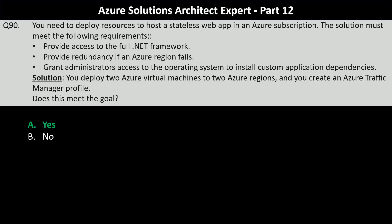This meets the goal. By deploying two Azure virtual machines in two separate Azure regions, you provide redundancy if one region fails. Azure Traffic Manager can be used to distribute traffic between the virtual machines in different regions, ensuring high availability. Deploying Azure virtual machines allows access to the full .NET framework and grants administrators the ability to access the operating system to install custom application dependencies.